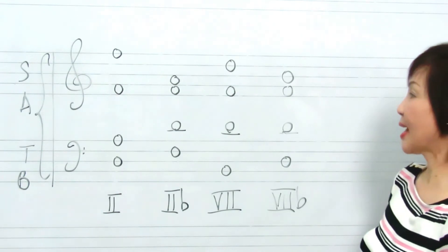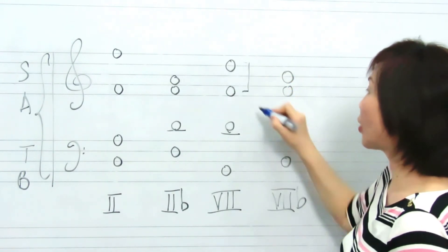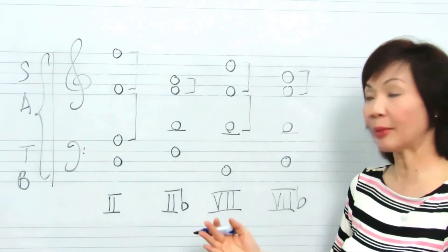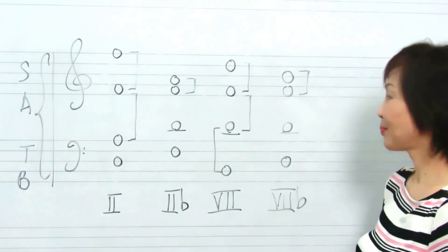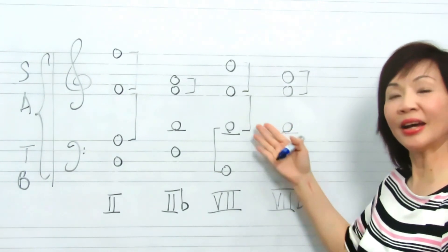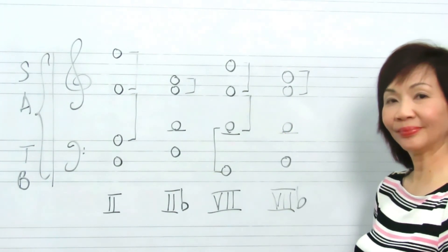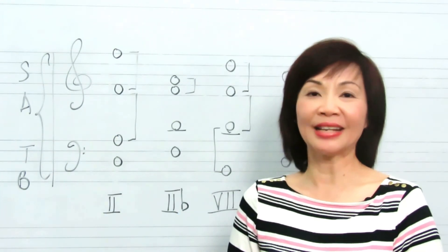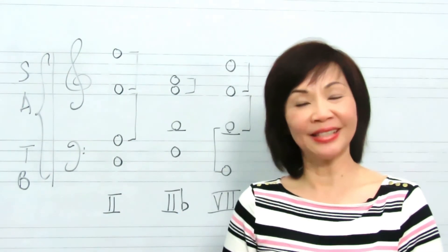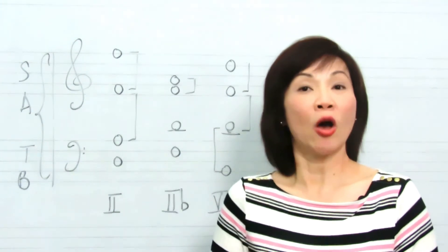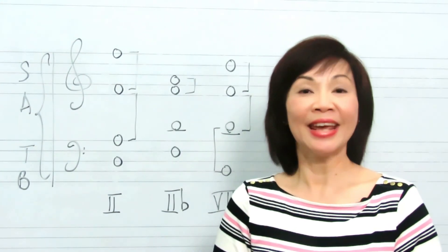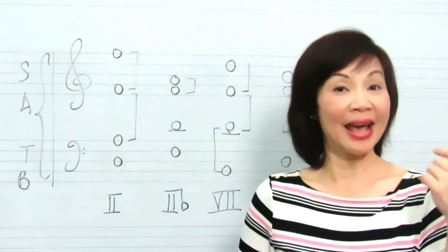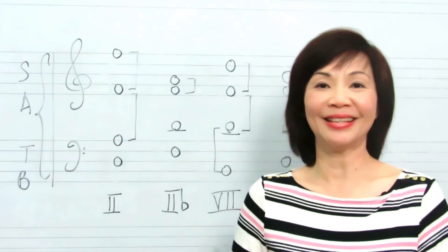You will notice that the spacing between the soprano and alto, alto and tenor are always kept within an octave. More than an octave is allowed between tenor and bass voice. Well, isn't it easy? You can now do the exercises on pages 5 and 6. Bear in mind that the chords on page 6 are to be written in the minor keys. Do remember to add the accidentals for the leading notes in the minor keys.